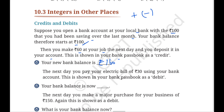The next day, you pay your electric bill of rupees 30 using your bank account. This is shown in your bank passbook as a debit. So we will pay 160 rupees minus 30 rupees — the answer is 130 rupees. Rupees 130 will be the balance in the account.